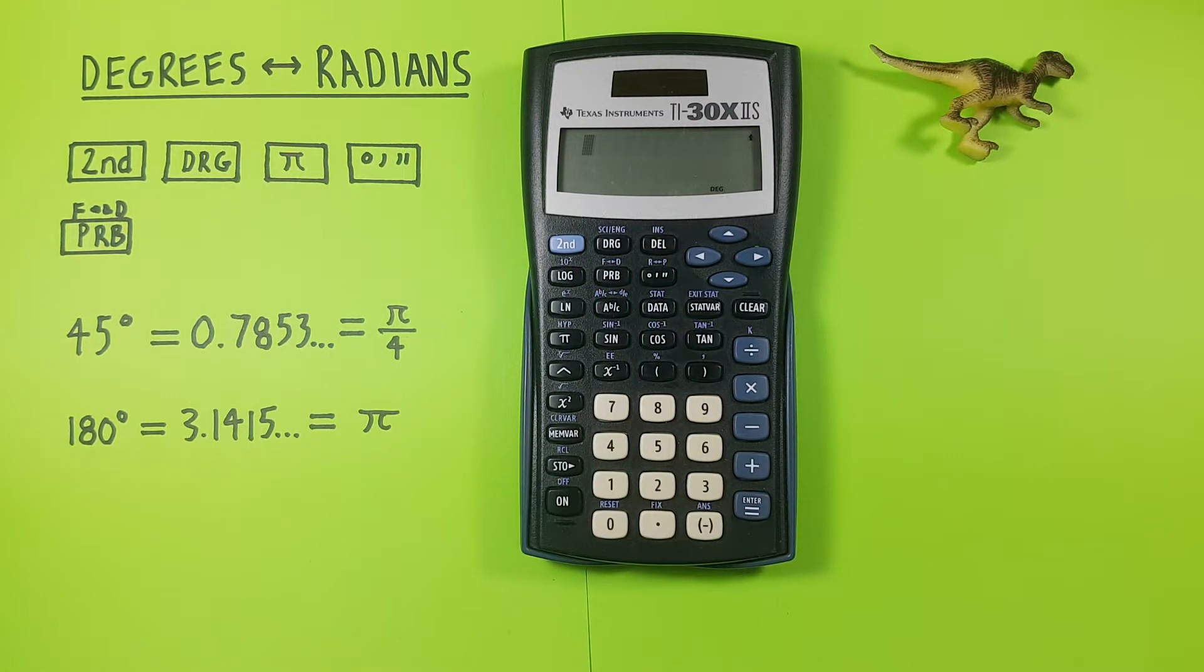This calculator lets us convert degrees to radians and radians to degrees if we're given one or the other, but there are a few steps to go through to do this.